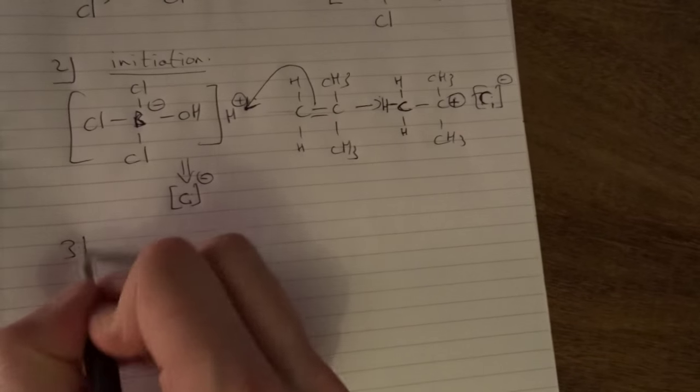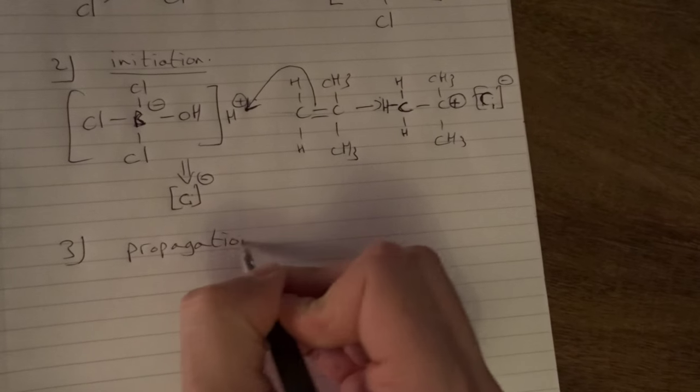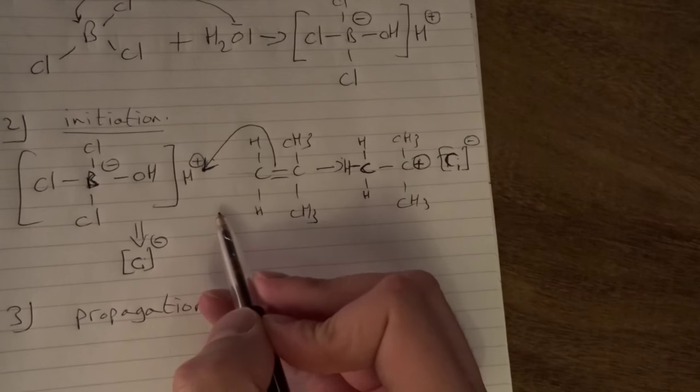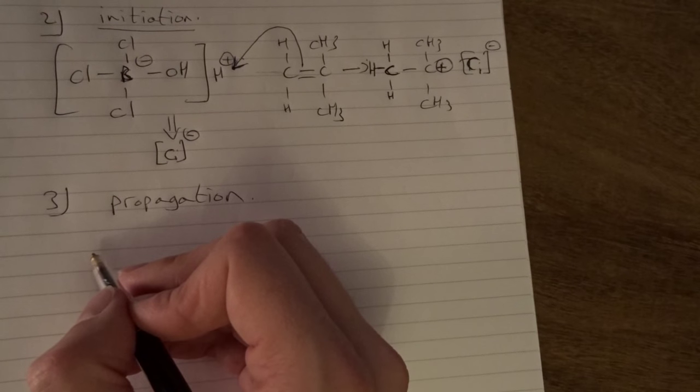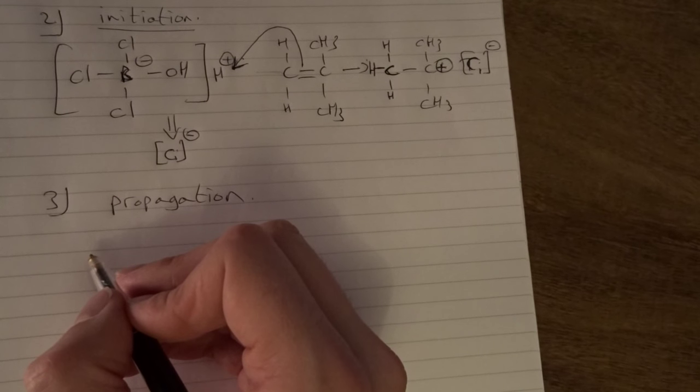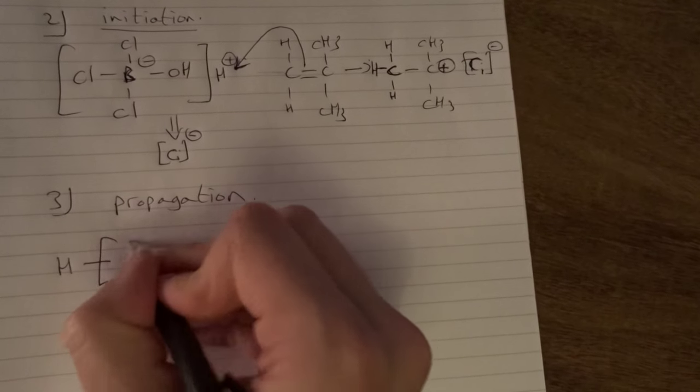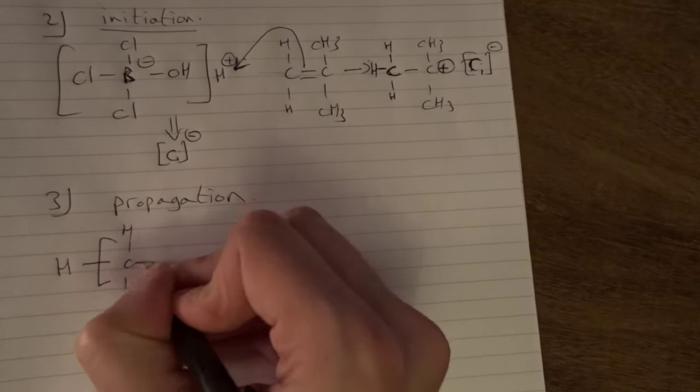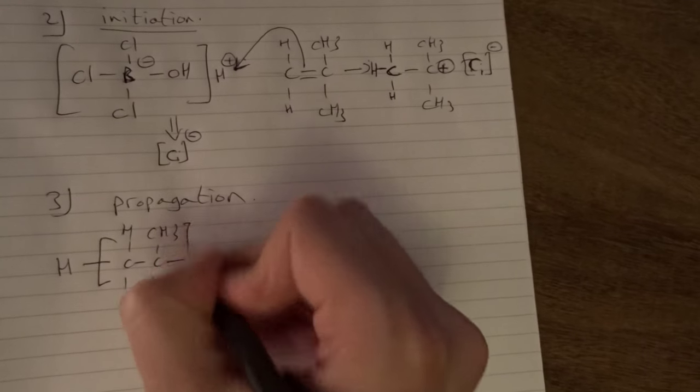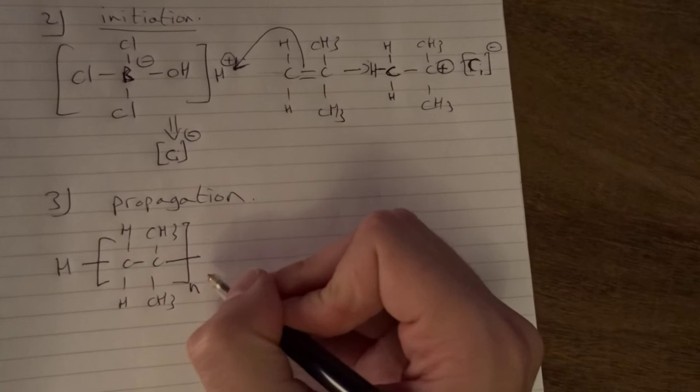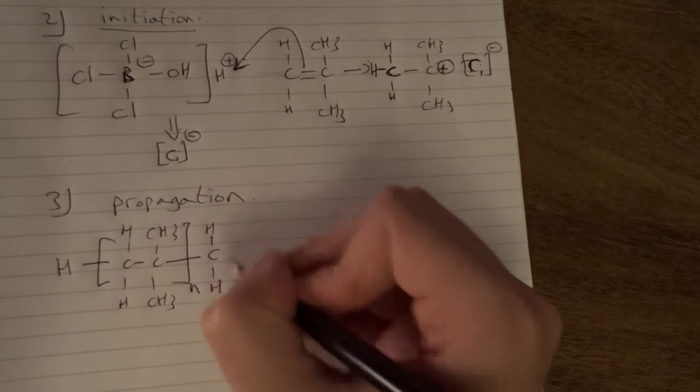Now we take a look at the propagation step. Actually this process will go on in the propagation step, the same as we have seen in the free radical polymerization. We draw here a polymeric structure because we know a lot of monomers have reacted already like this in the propagation step, and we just want to visualize what is happening.